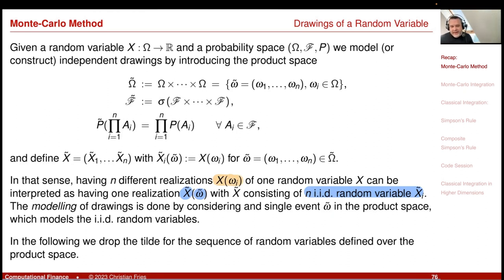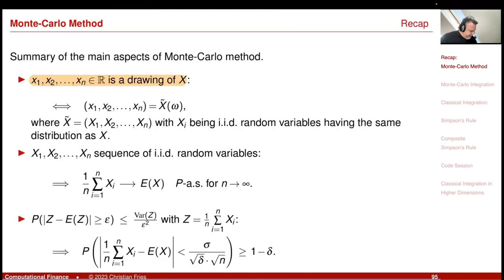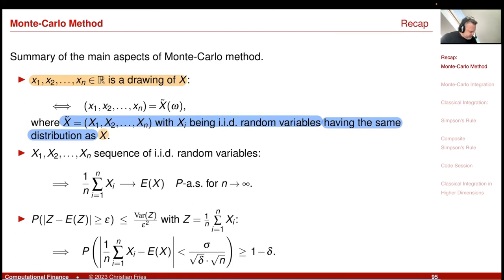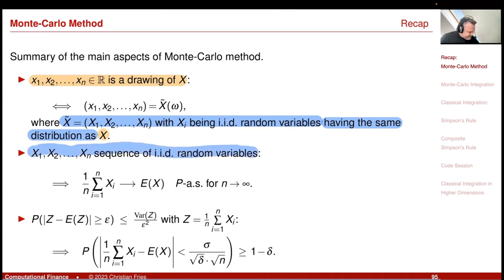This represents the drawings of your original random variable X. Your X of omega_i is actually the X-tilde of a single event omega-tilde, where X-tilde is this sequence. So we have a sequence of IID random variables having the same distribution as our original random variable X, and this corresponds to the modeling of this drawing. This was relevant because all our convergence results were formulated in terms of these sequences.